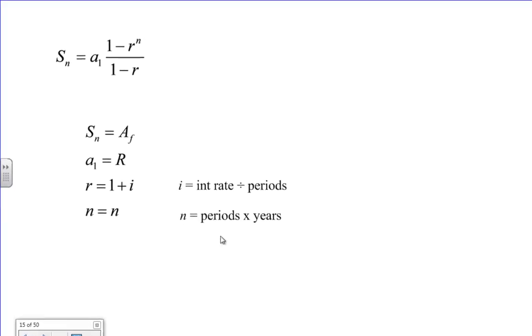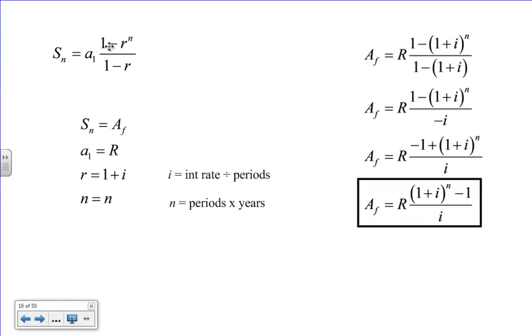Because it's a geometric sequence, I can use the sum formula for a geometric sequence. S sub n is the sum, we're going to call that A sub f, or the future amount of annuity. A sub 1 is our first term, that's going to be our repeating payments. R is actually 1 plus the interest rate divided by how many periods are in a year. And then n is how many payments we're actually going to make. So the i is the interest rate divided by the period. If we're making monthly payments, we divide by 12. If it was quarterly payments, we divide by 4. I do some math, and this is the formula I get: A sub f equals R times (1+i)^n minus 1 over i.